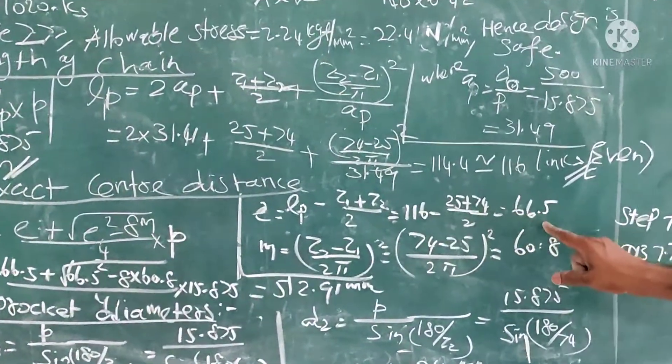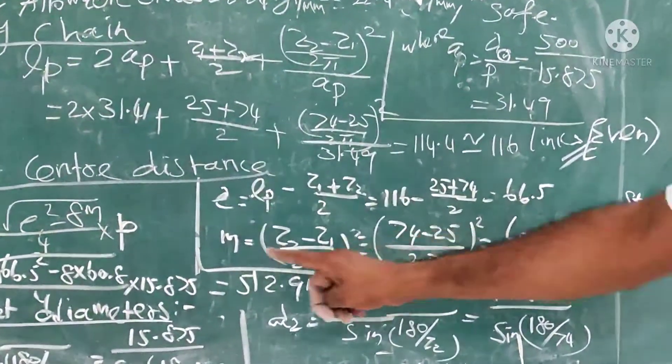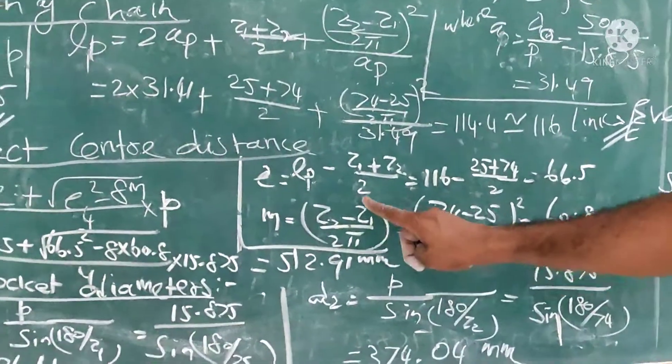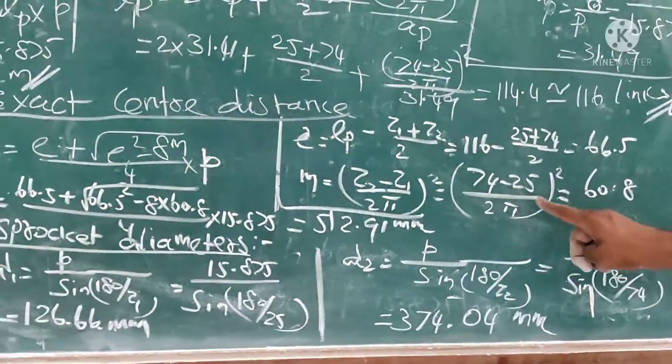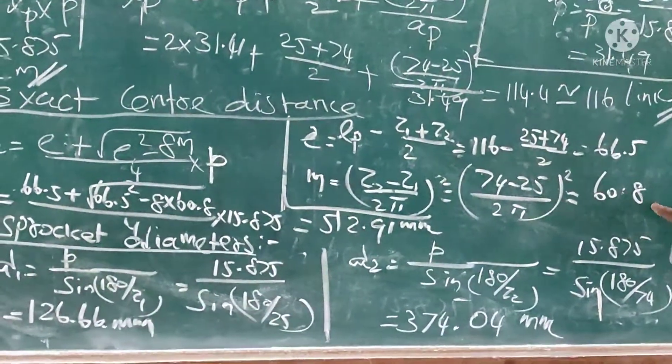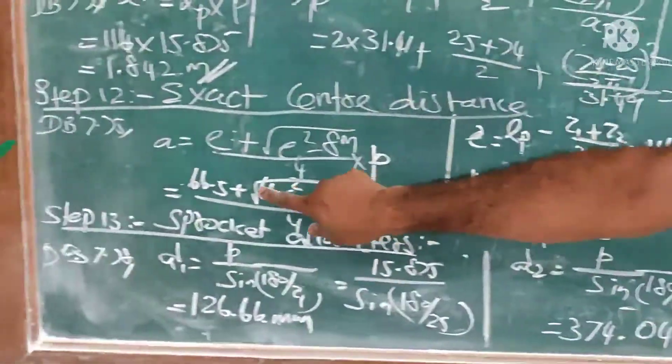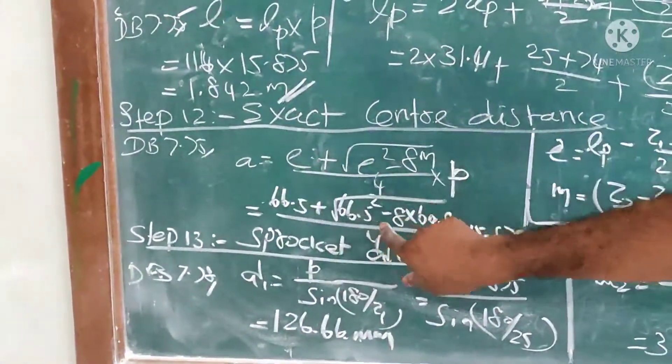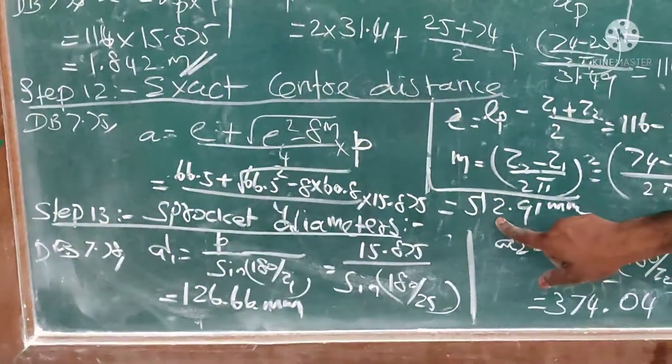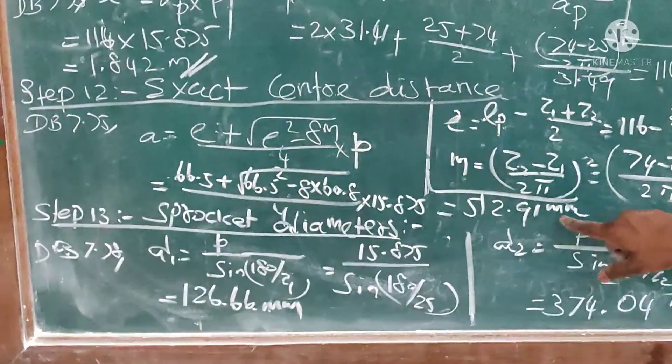Substitute the values, you get 66.5. M = [(z2 - z1)/(2π)]². Substitute here, you get 60.8. Take these two values, substitute in this particular equation, you get the value as 512.91 millimeter.